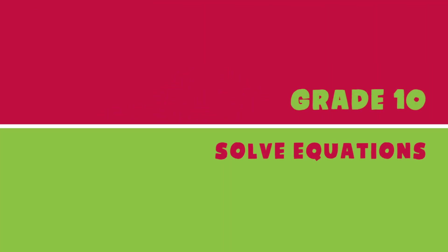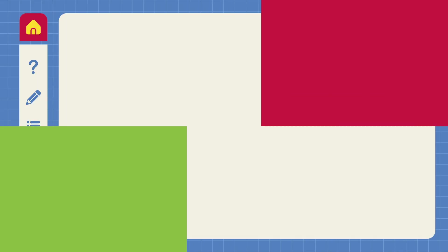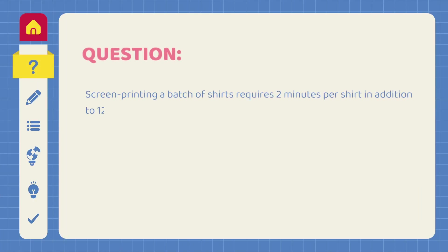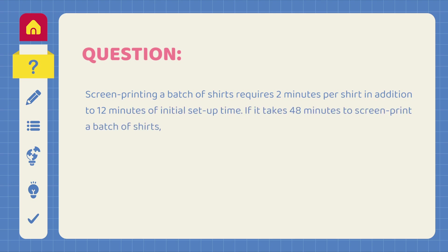Solve Equations. Screen printing a batch of shirts requires 2 minutes per shirt in addition to 12 minutes of initial setup time. If it takes 48 minutes to screen print a batch of shirts, how many shirts are there in the batch?